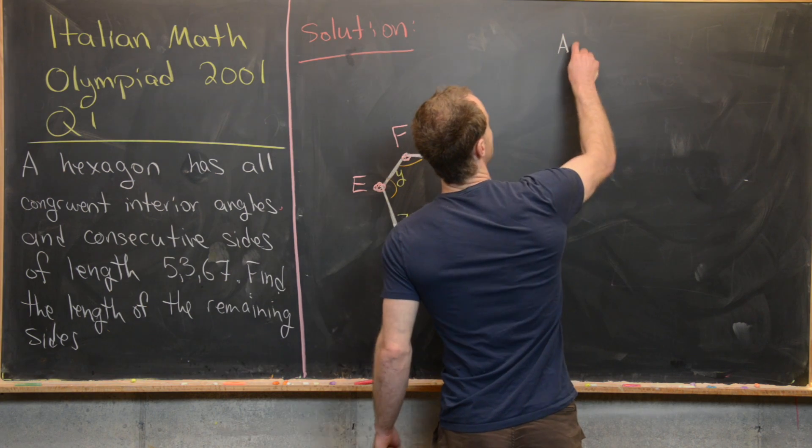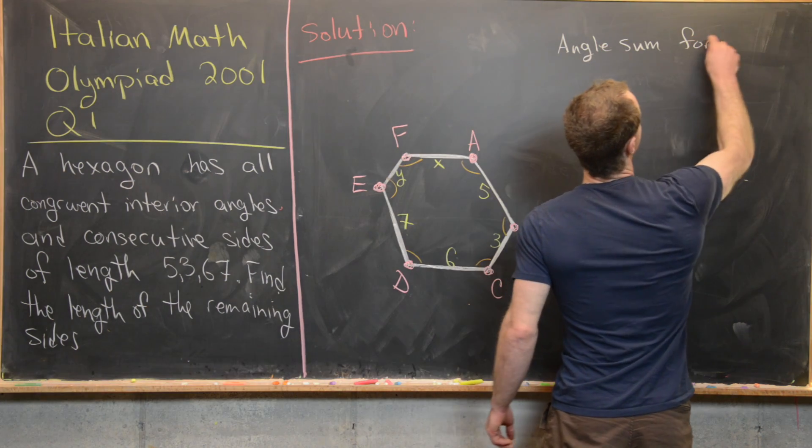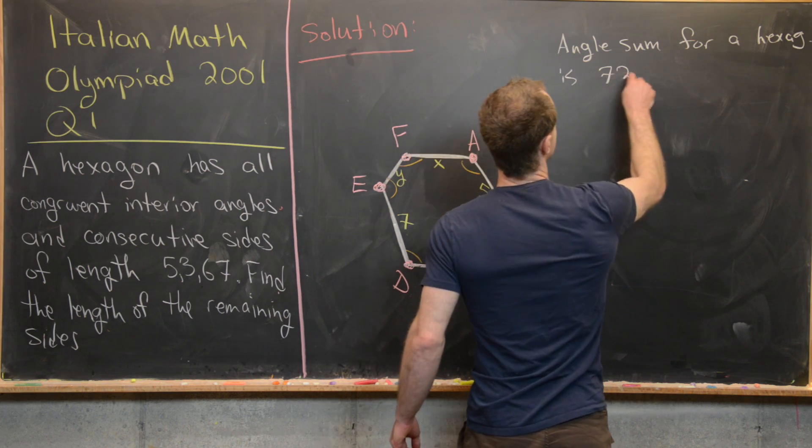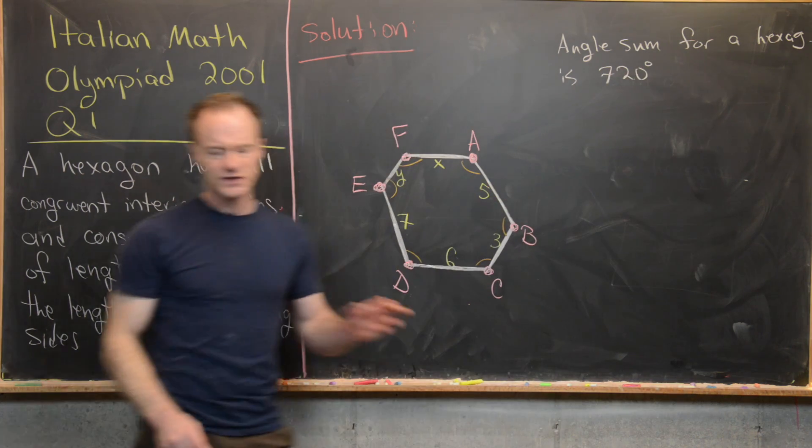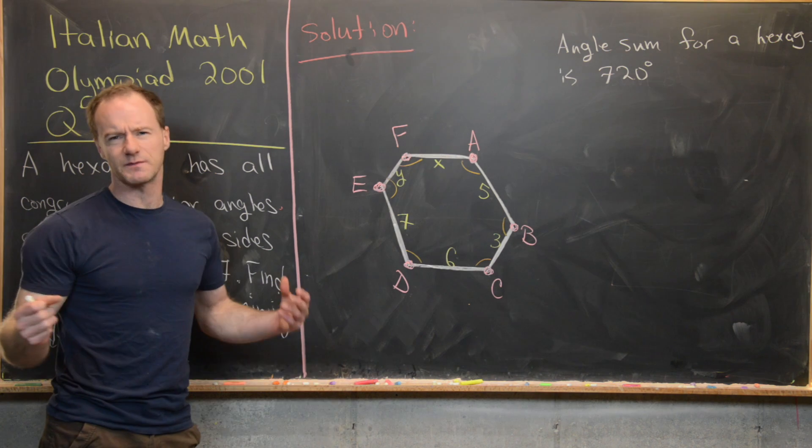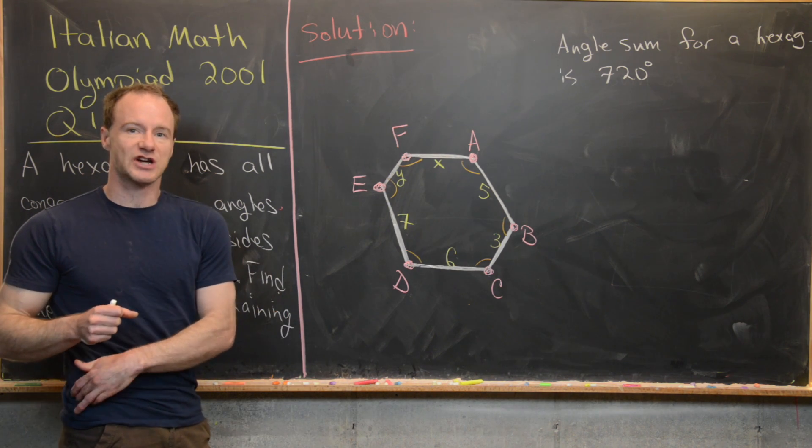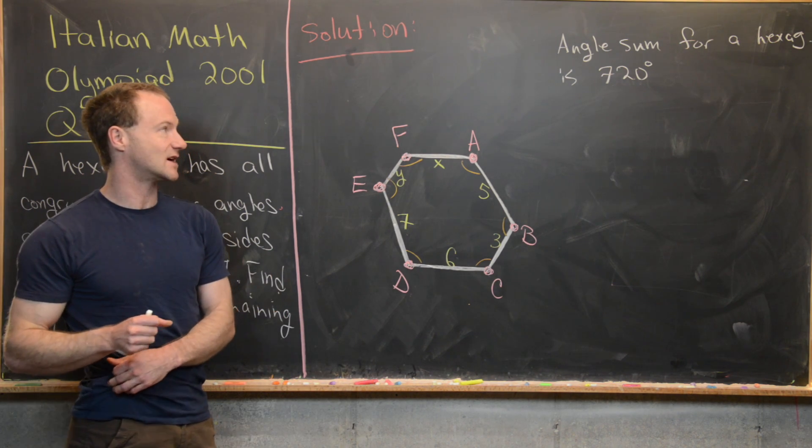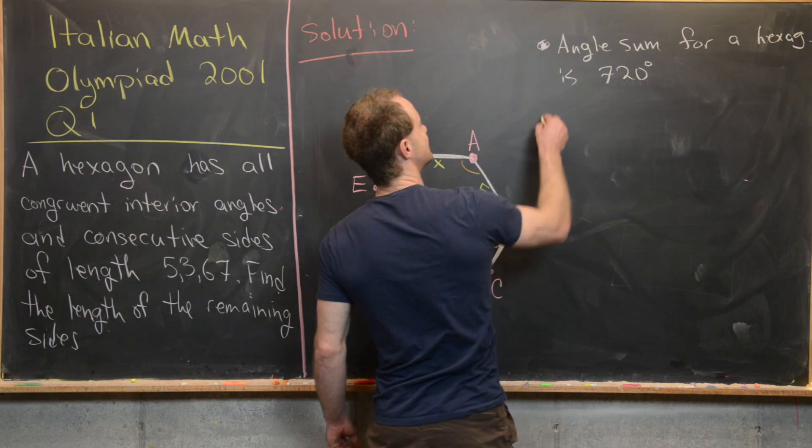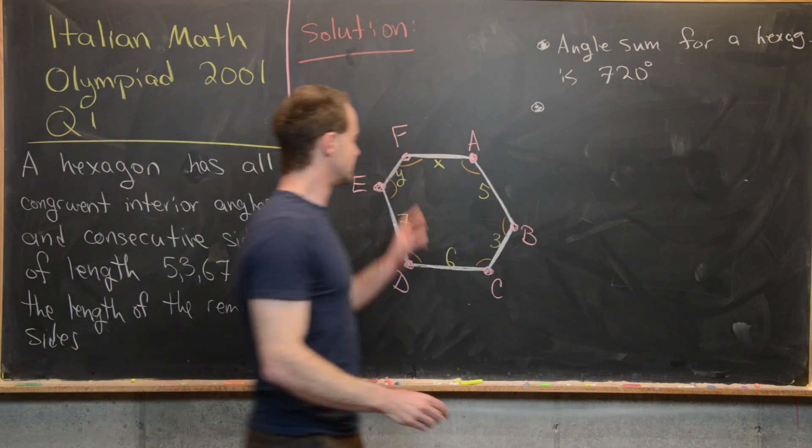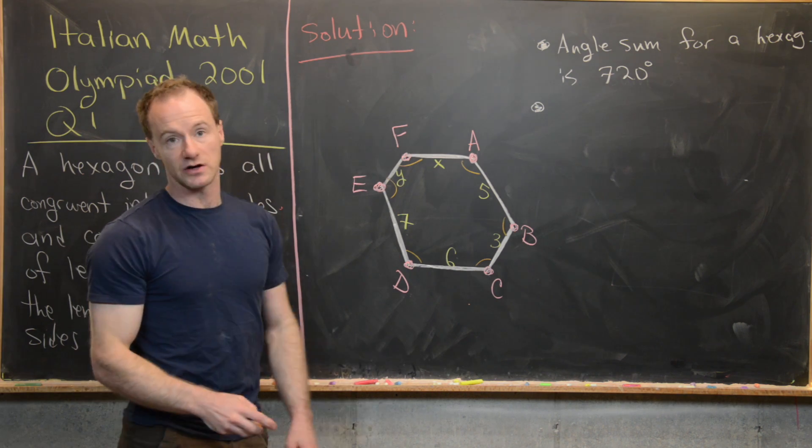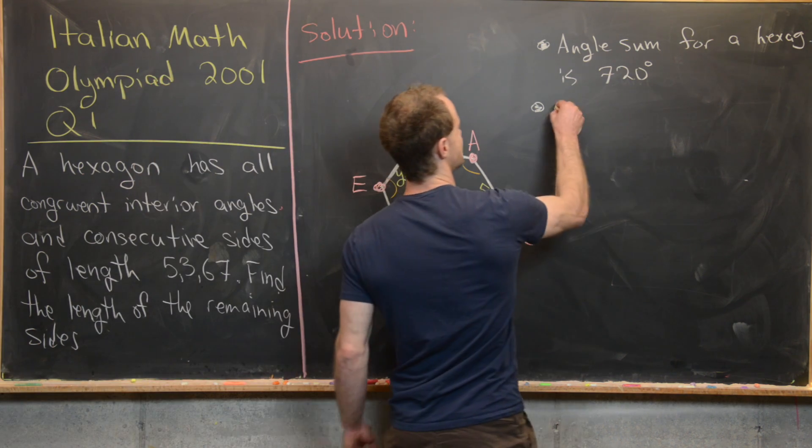And then another thing that we know is that the angle sum for a hexagon is 720 degrees. So again, this kind of formula for the angle sum of an n-gon is something that you should keep in mind for any of these geometry type problems. And for a hexagon it's 720 degrees.